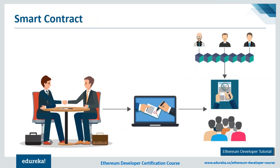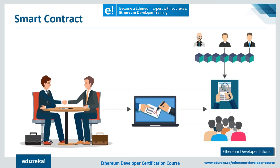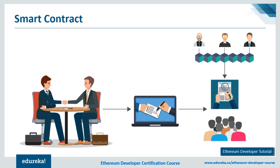The phrase 'smart contracts' was proposed by Nick Szabo with a vision to extend functionality of electronic transaction methods such as POS (point of sale) to the digital realm. Smart contracts help you exchange property, shares, or anything of value in a transparent, conflict-free way while avoiding a middleman. Simply put, it is a contract that self-executes and handles enforcement, management, performance, and payment — computer code that facilitates transfer of digital assets like money, content, property, or shares.